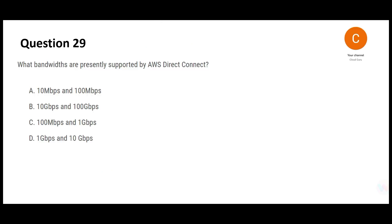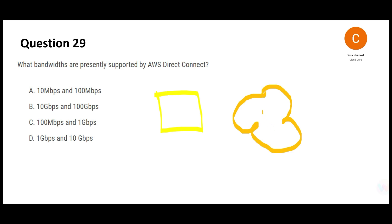The first question asks: what bandwidths are supported by AWS Direct Connect? Let's first look at what Direct Connect is. Suppose you have on-premises servers and then you have the AWS cloud. We plug Direct Connect here so that on-prem can talk to the AWS cloud.